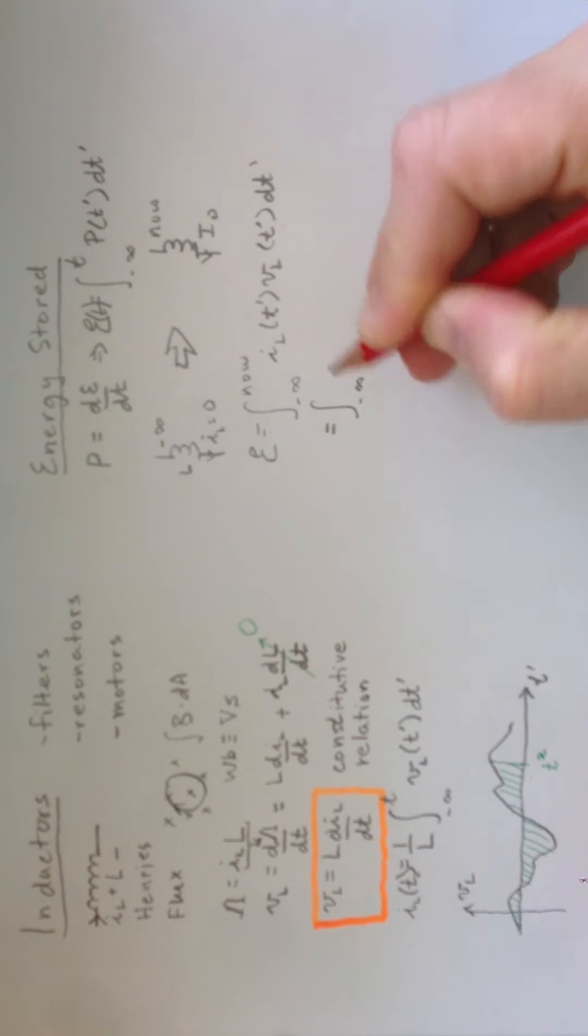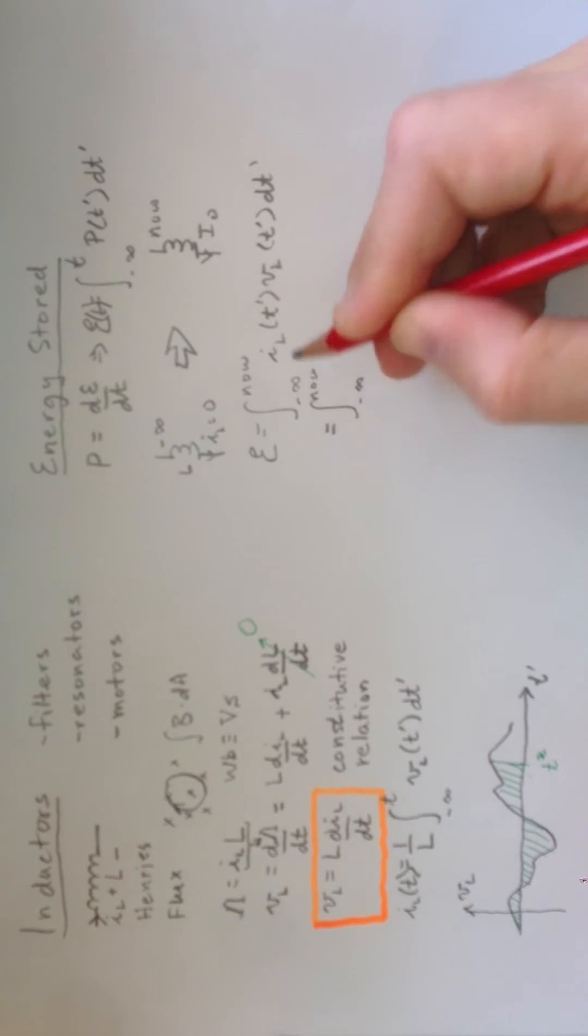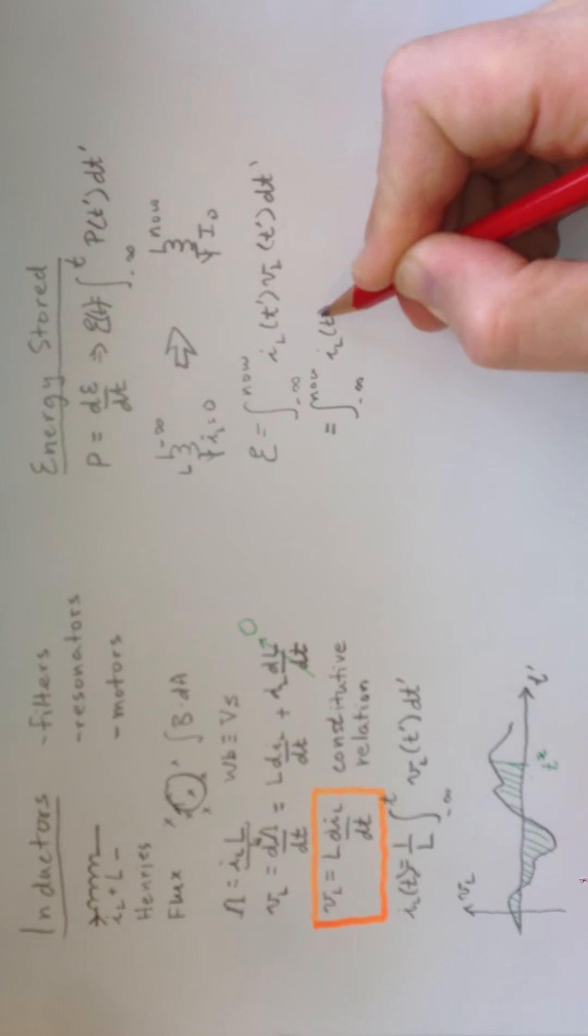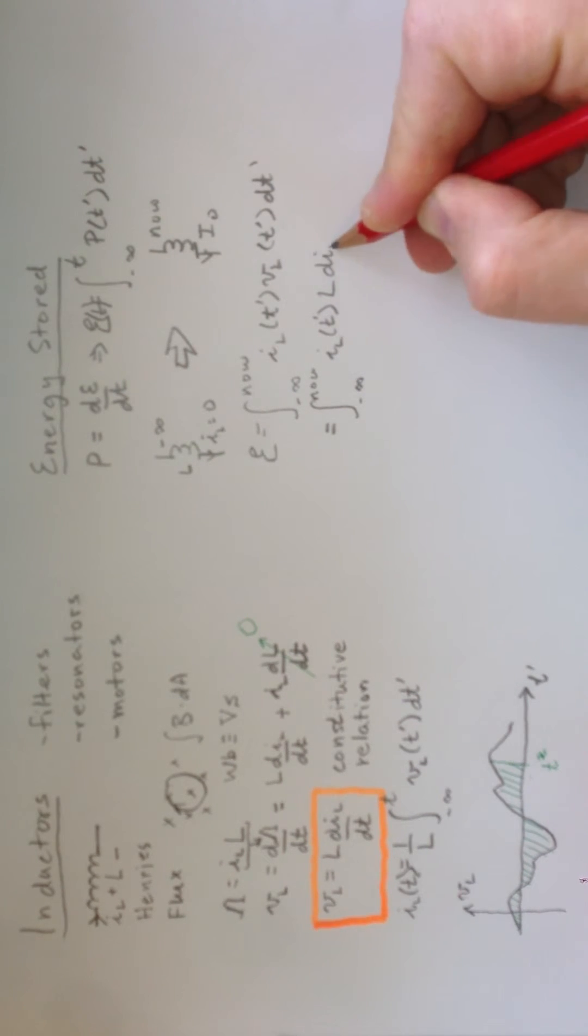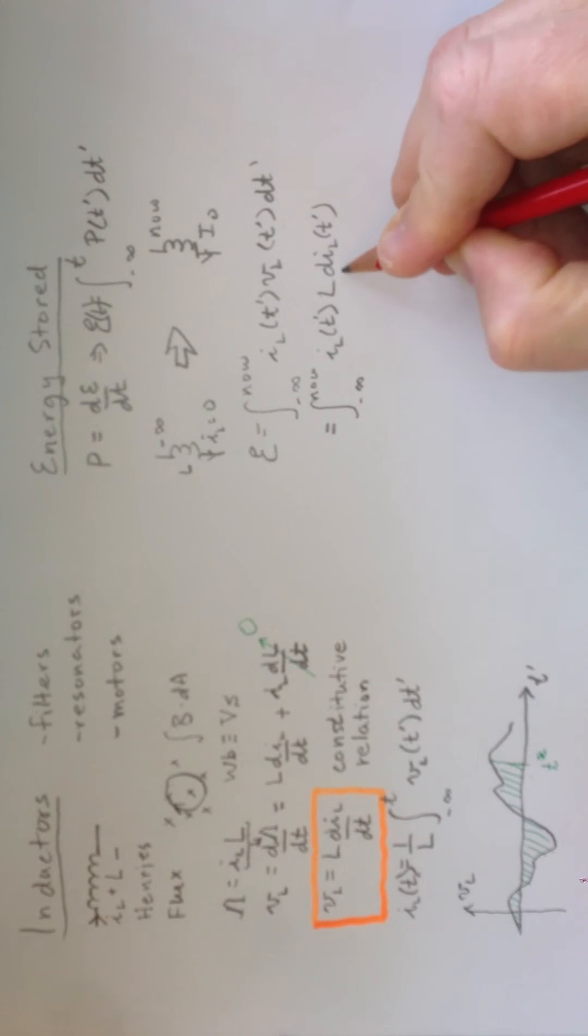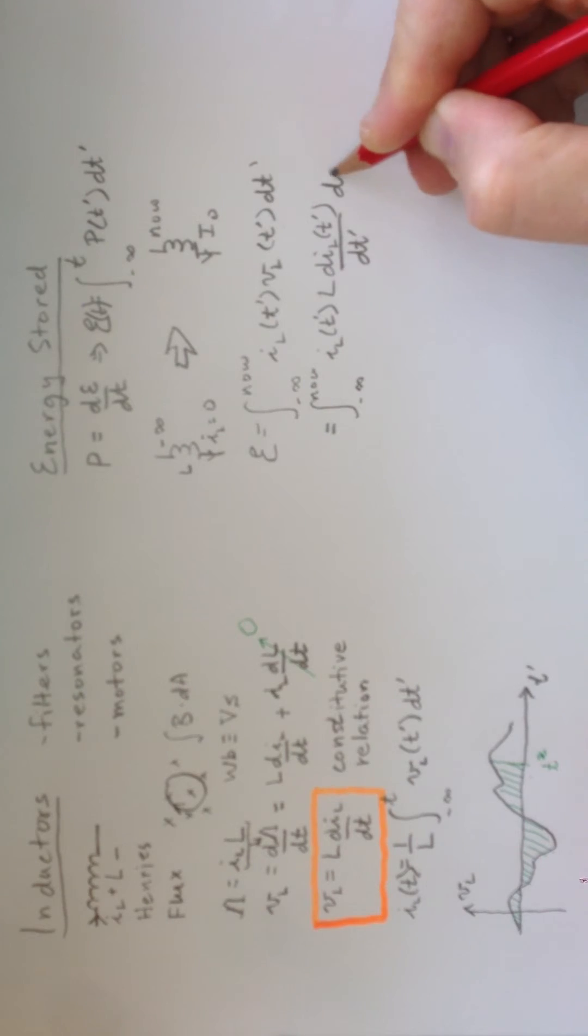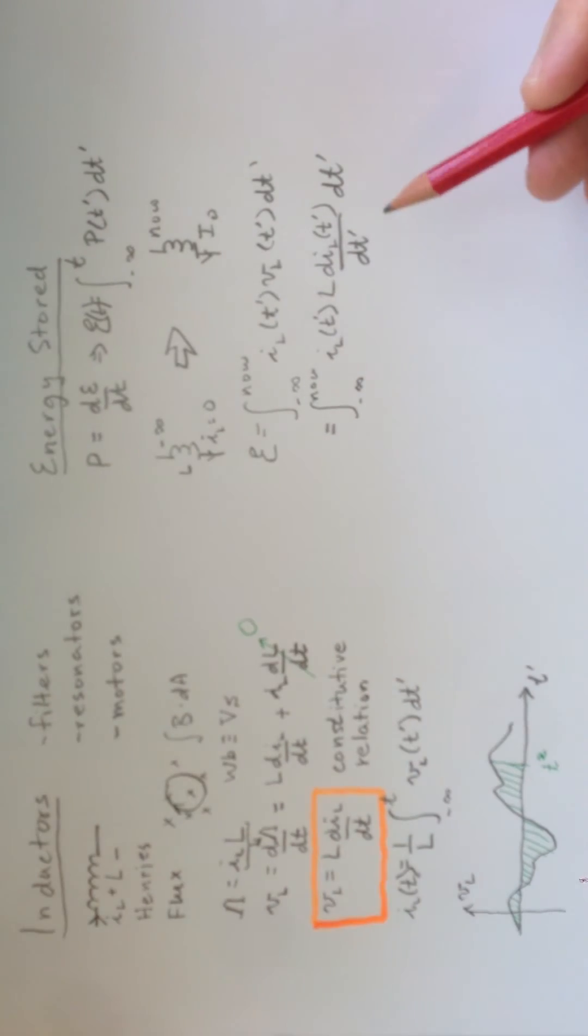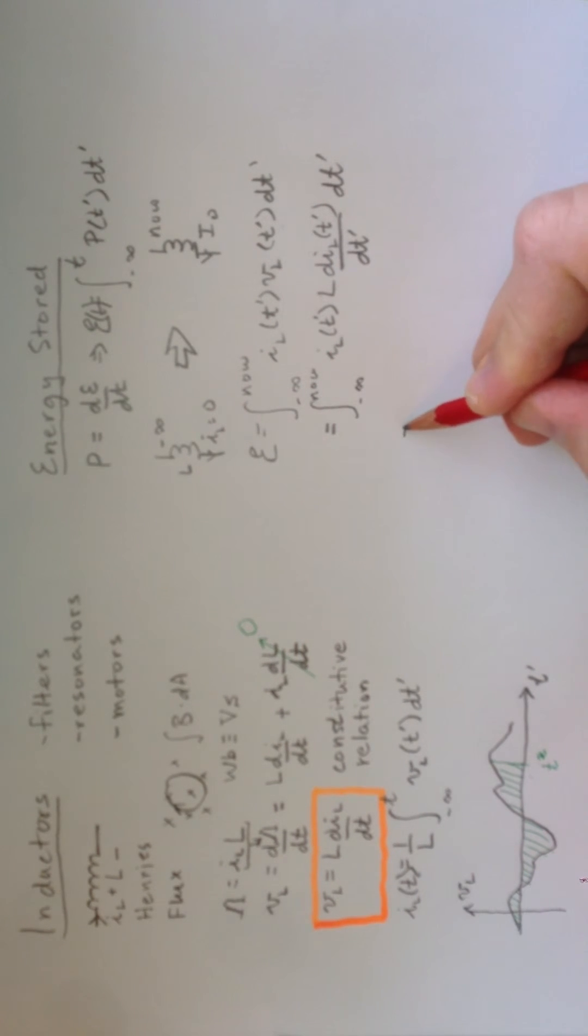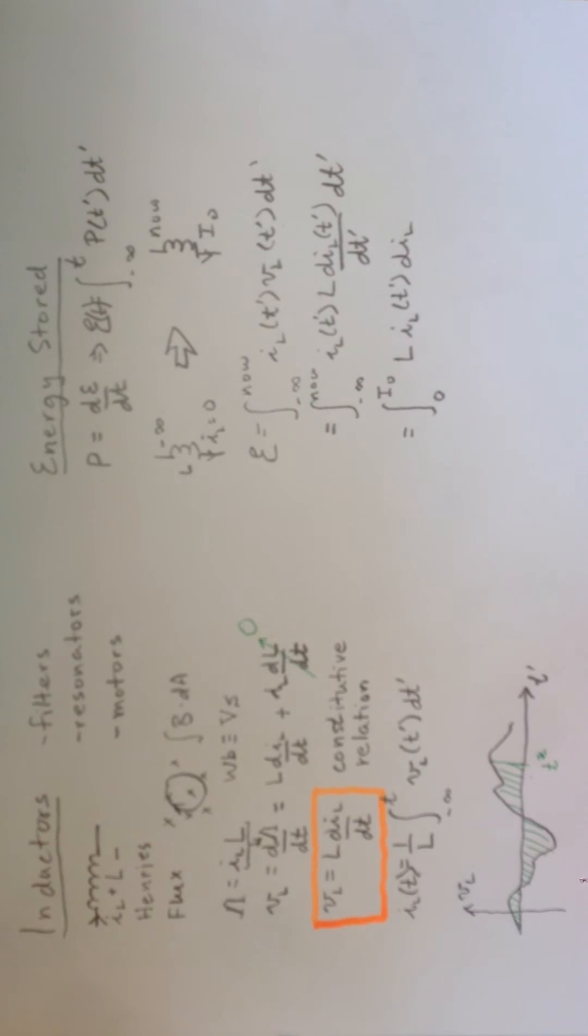And, all of a sudden, if we do that, things look a lot better, because we have this LDIL dt prime. And it looks like the dt prime's cancel. Now, you can't quite do that without worrying about the limits of the integration, because they're expressed right now in terms of time. But if we re-express these limits in terms of a current, so, we take the current at minus infinity, which was 0, and we take the current now, which is I0, then we can cancel the dt primes and end up with an integral in terms of DIL.